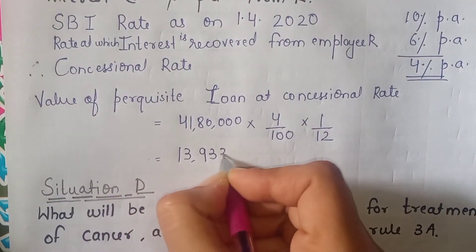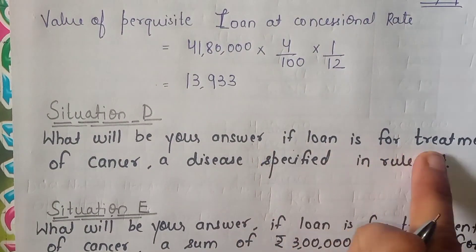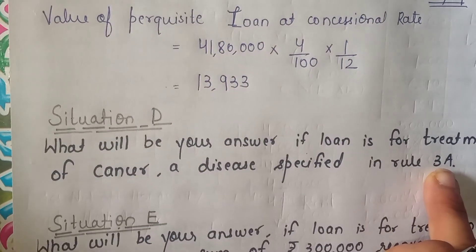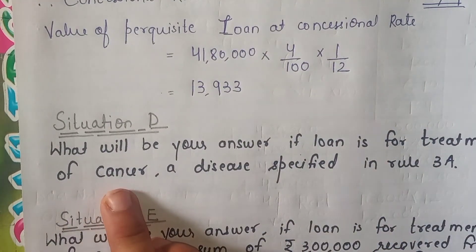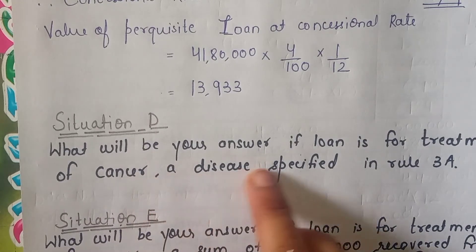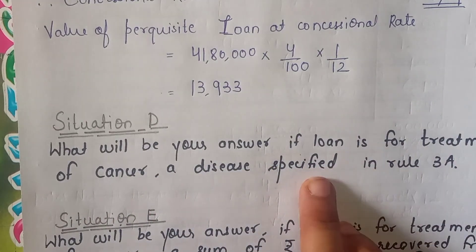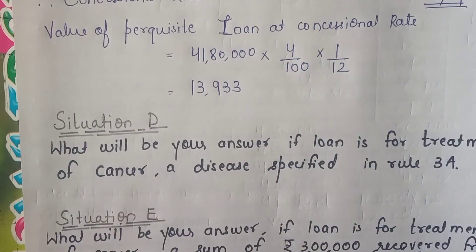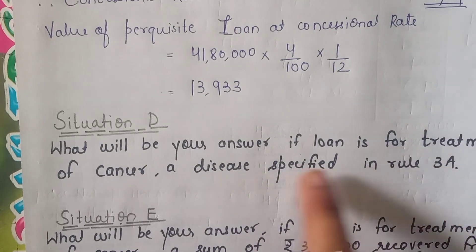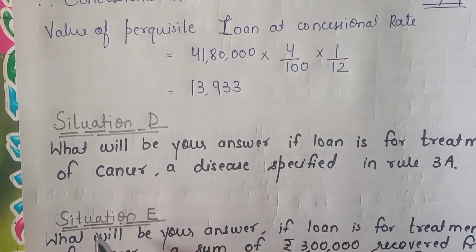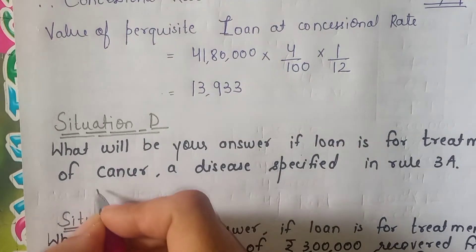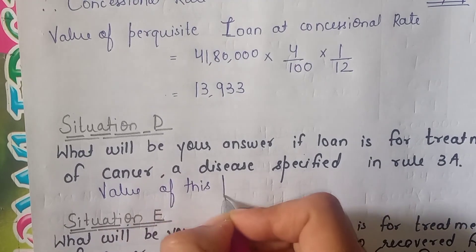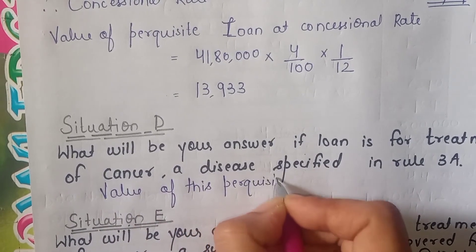Situation D: What will be your answer if the loan is for the treatment of cancer — a disease specified in Rule 3A? You do not need to memorize the diseases under Rule 3A; the question itself will tell you whether it is covered. If the loan is given for cancer treatment which is a Rule 3A disease, your answer will simply be: value of this perquisite is nil — it is a tax free perquisite.